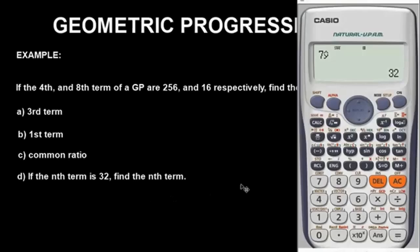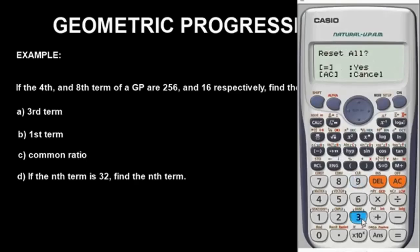Very, very simple. Once you are done, clear the calculator to remove it from statistics mode. Press shift, button 9, and follow the instructions. To clear all, press 3, then press equals, and equals again. The calculator is now cleared. That's it for this part of the class.